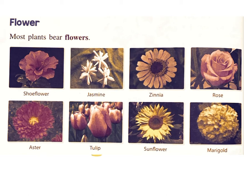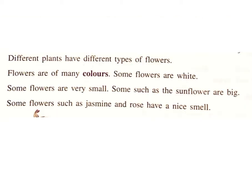Flower: Most plants bear flowers — shoe flower, jasmine, zinnia, rose, aster, tulip, sunflower, marigold. Different plants have different types of flowers. Flowers are of many colors. Some flowers are white. Some flowers are very small.